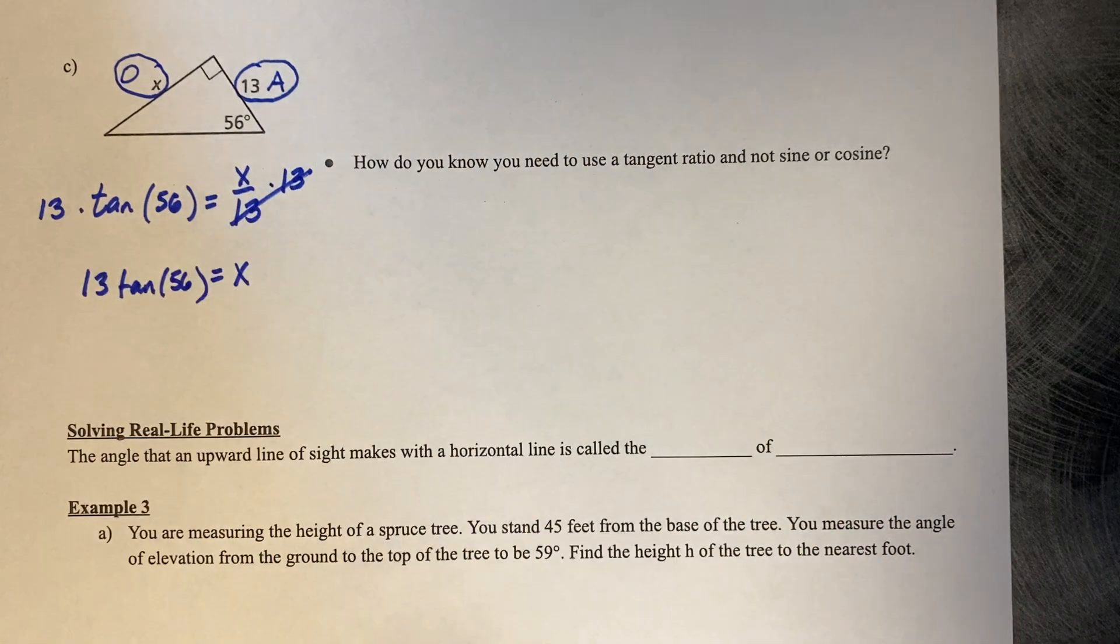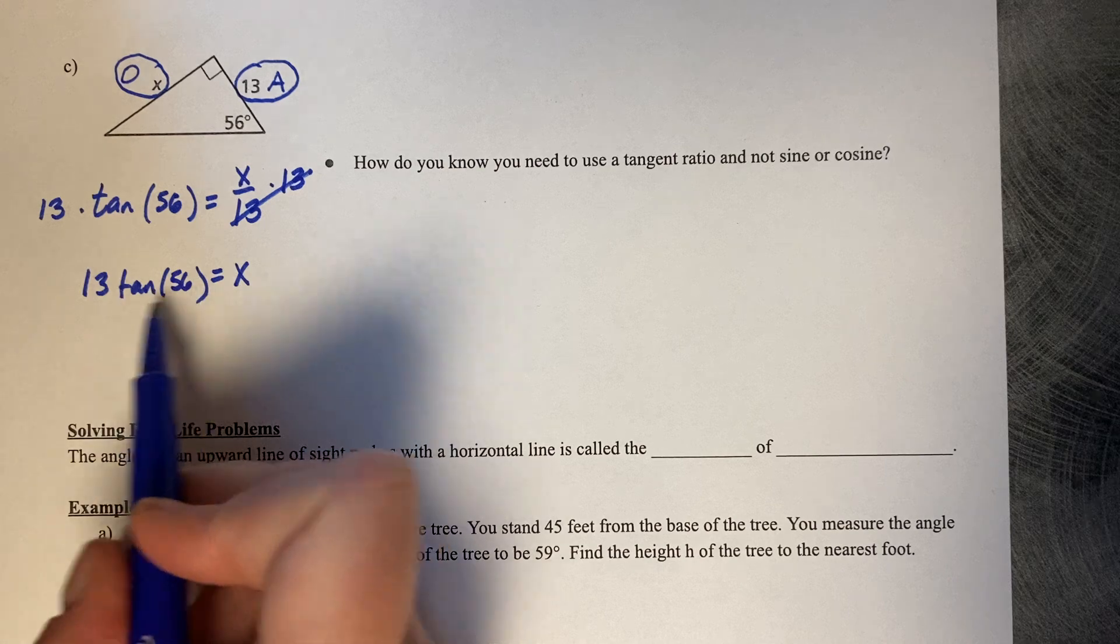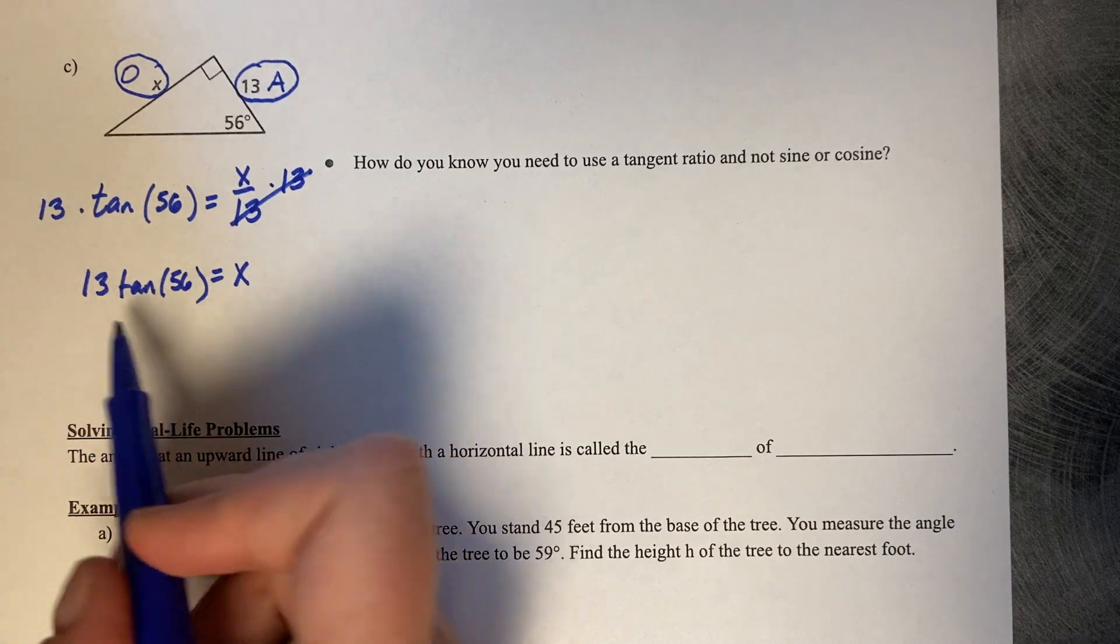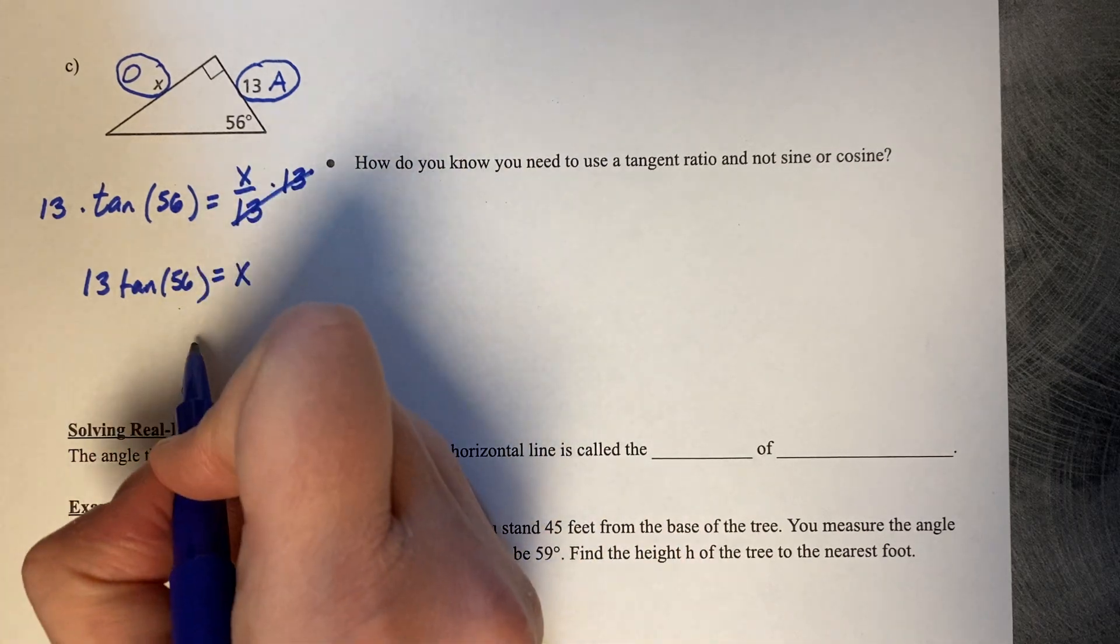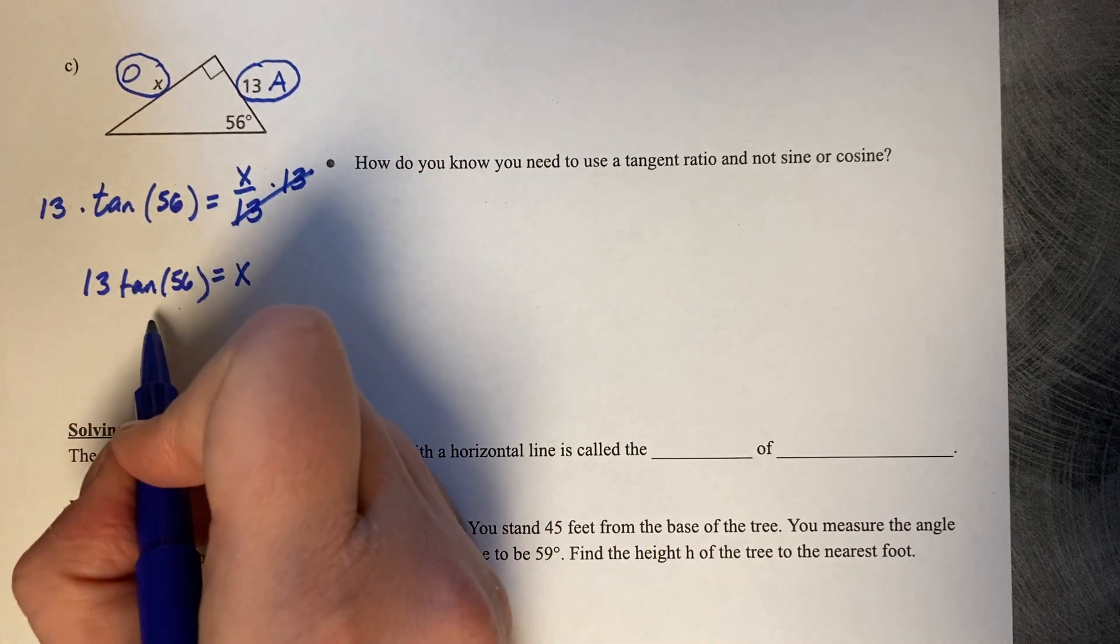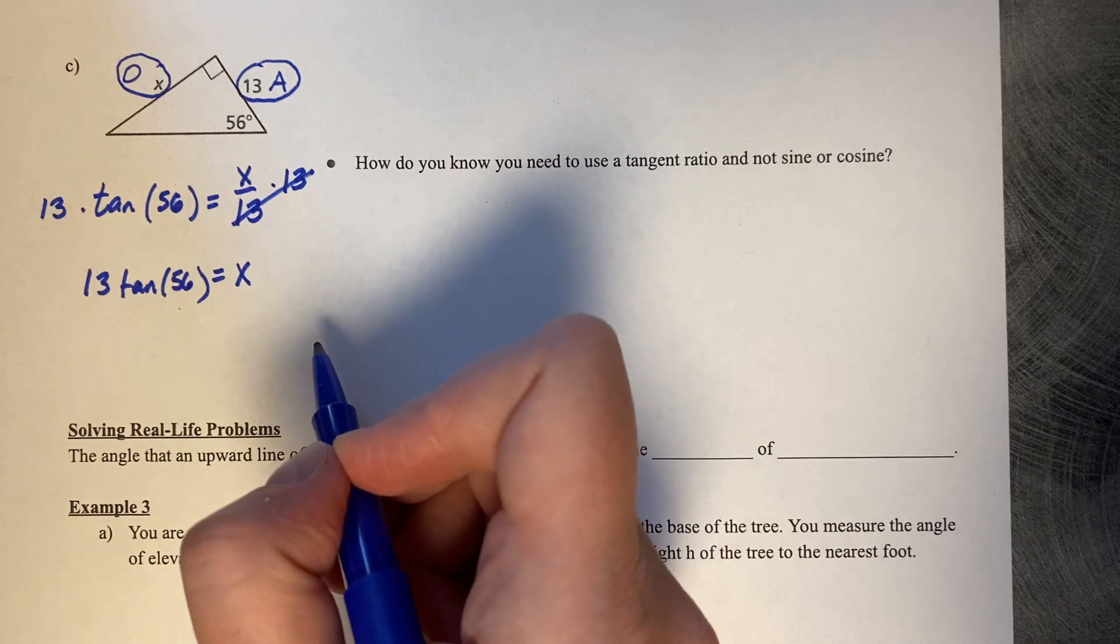So x equals 13 times the tangent of 56. You can write it without a multiplication symbol, and you can even type it into your calculator just like that. This is an exact answer. But if we want it rounded to the first decimal place...